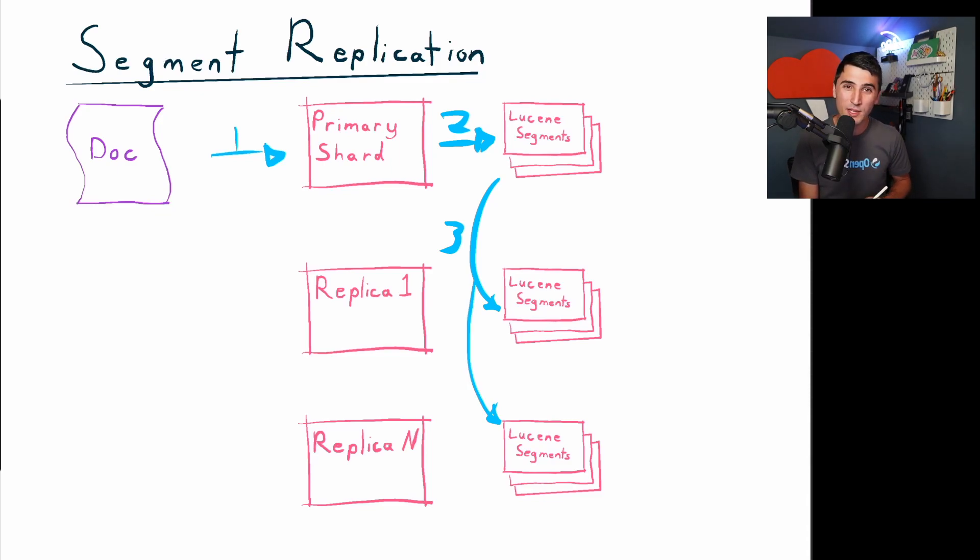The other thing you need to be careful about is making sure you have your primary shards evenly distributed. That way, you don't end up with a hot node that's doing all of your ingestion. Then you have unused compute on all of your replicas.